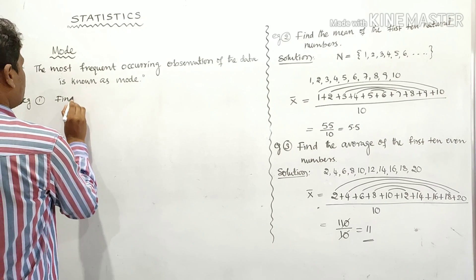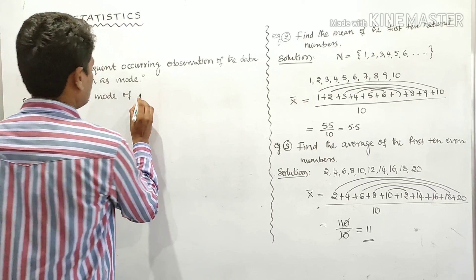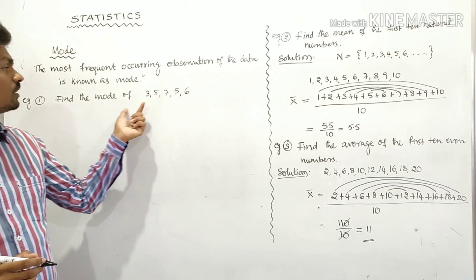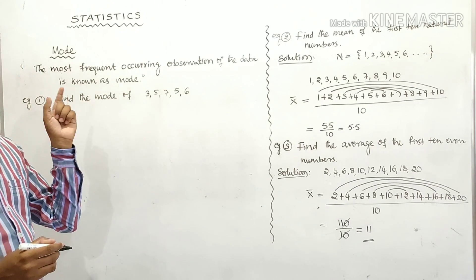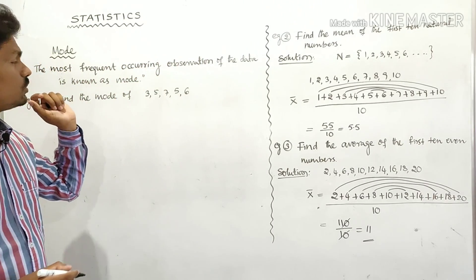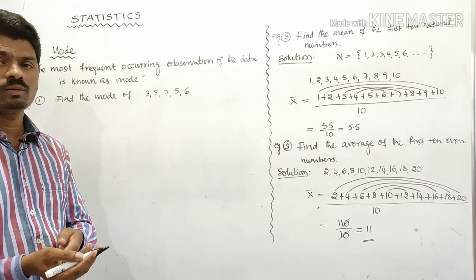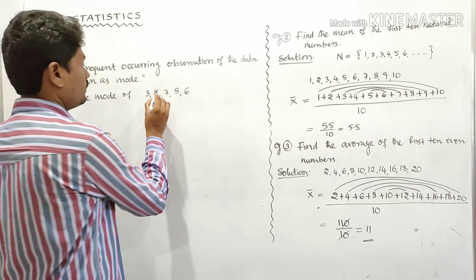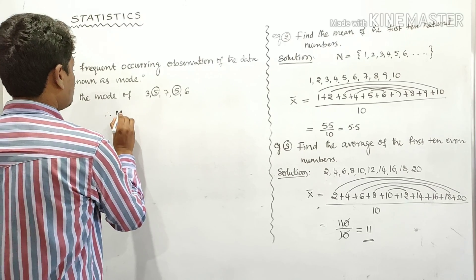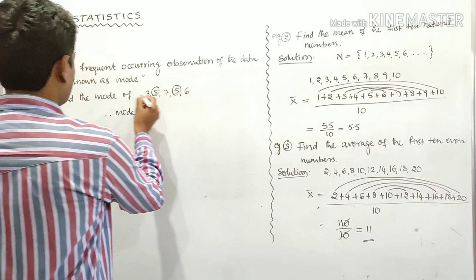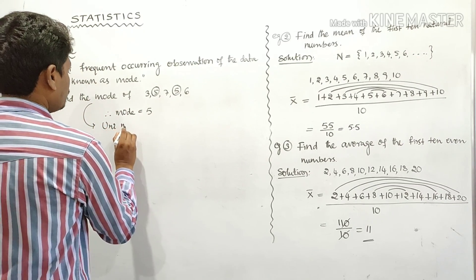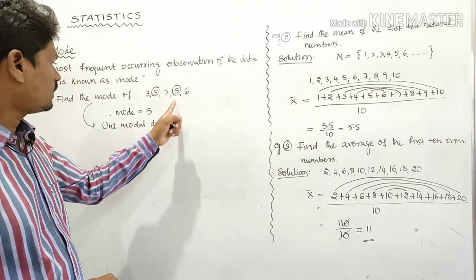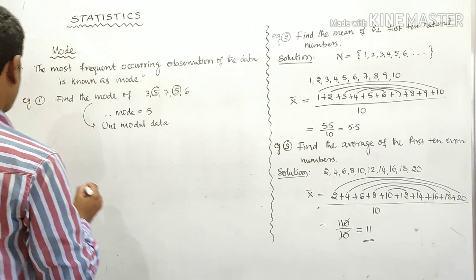Example one: Find the mode of 3, 5, 7, 5, 6. The most frequently occurring observation is the mode. Here, 3 appears once, 5 appears twice, 7 appears once, and 6 appears once. Since 5 is repeated the most, the mode equals 5. This data is called unimodal data because it has only one mode.